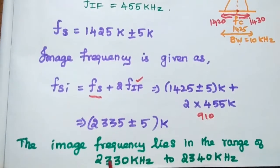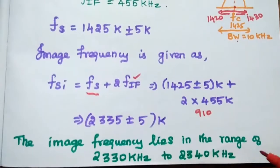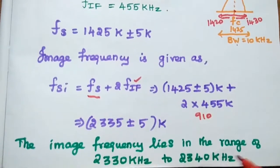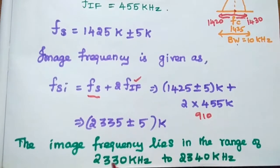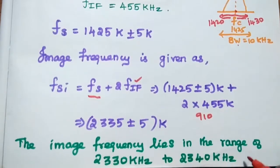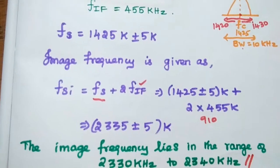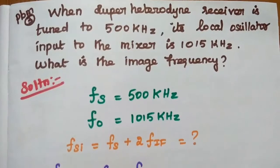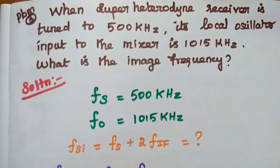Therefore, the image frequency lies in the range from 2330 kHz to 2340 kHz. If we subtract 5, the value is 2330; if we add 5, it is 2340. So the image frequency lies between these two values — this is the answer.